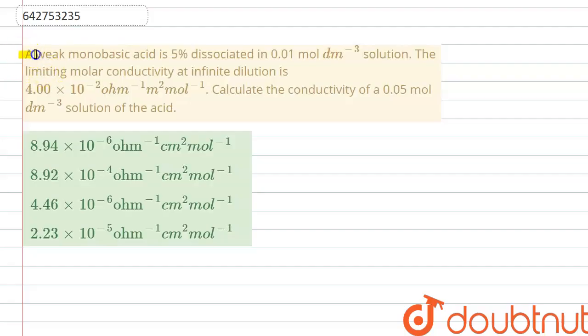The given question says: a weak monobasic acid is 5% dissociated in 0.01 mole per decimeter cubed solution. The limiting molar conductivity at infinite dilution is 4 × 10⁻² ohm⁻¹ meter² per mole.